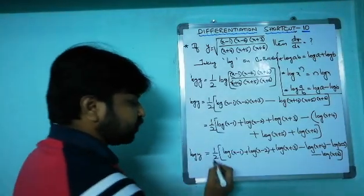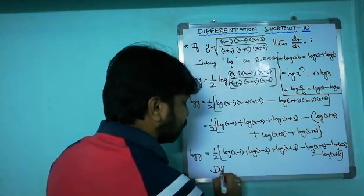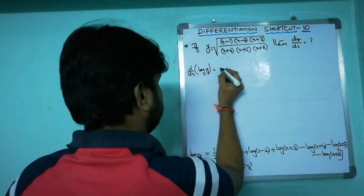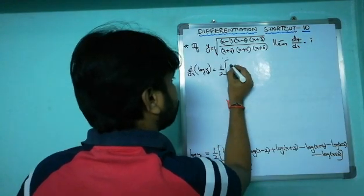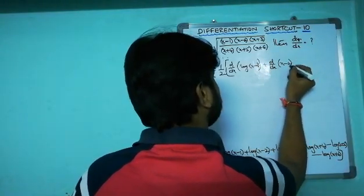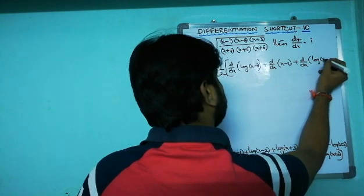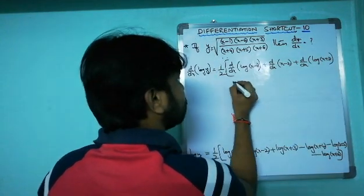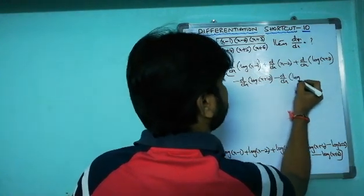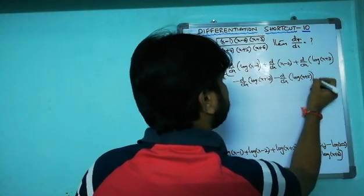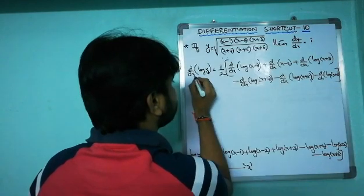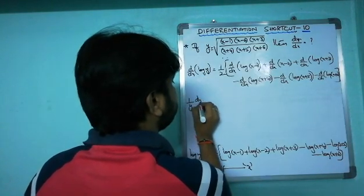Now differentiate both sides with respect to x. d/dx of log y equals (1/2) times [d/dx of log(x−1) + d/dx of log(x−2) + d/dx of log(x+3) − d/dx of log(x+4) − d/dx of log(x+5) − d/dx of log(x+6)]. The left side gives (1/y)·(dy/dx).